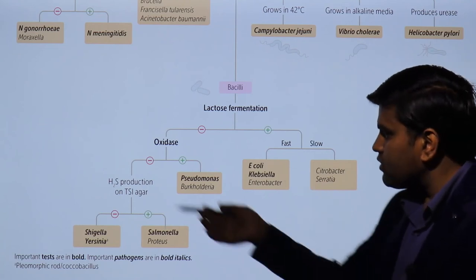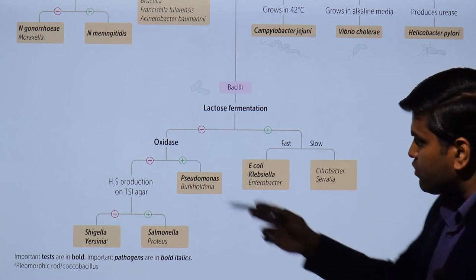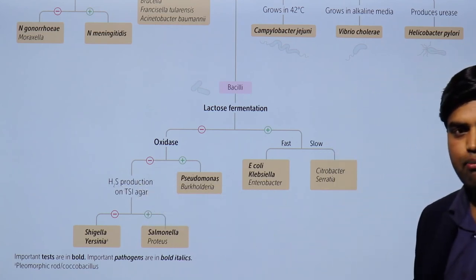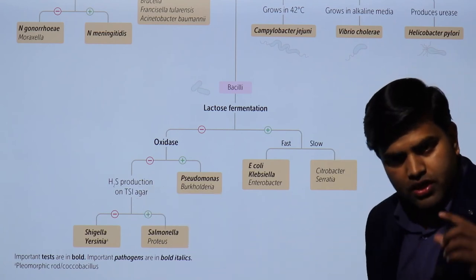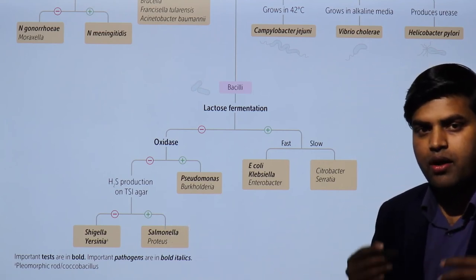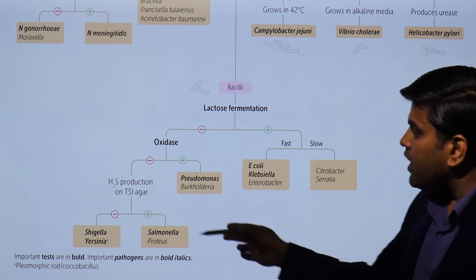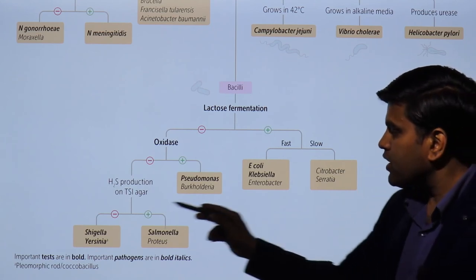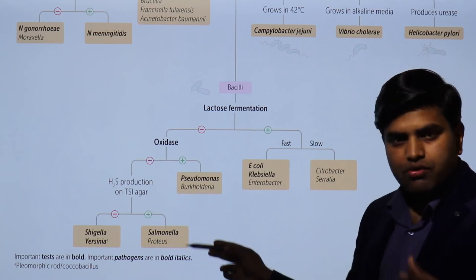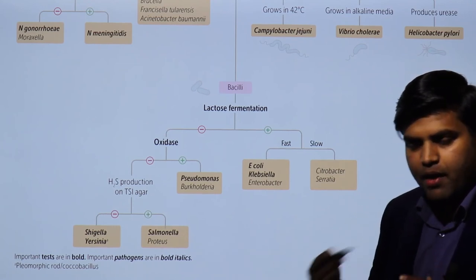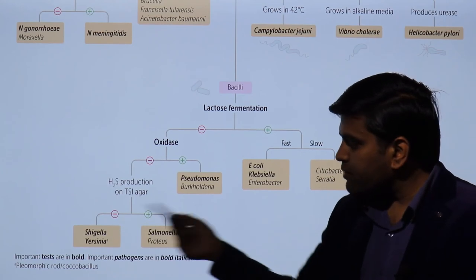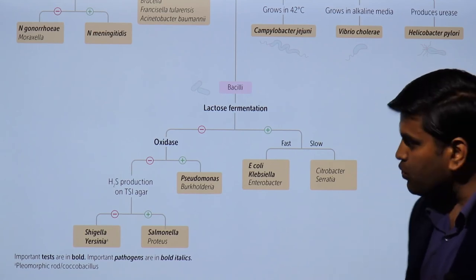For further differentiation among the oxidase-negative pale organisms, we do the H2S production test using TSI (triple sugar iron) agar. Organisms that produce H2S show a black gas in TSI agar — these are Salmonella and Proteus. If there is no H2S production in TSI agar, we think of Shigella and Yersinia. Proteus can also be differentiated from Salmonella by its fast swarming growth.